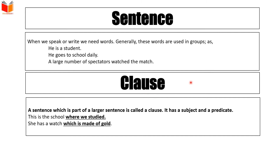اسی سے ملتا جلتا ایک اور element ہے جسے clause کہتے ہیں۔ Phrase، sentence اور clause تینوں آپس میں ملتے جلتے ہیں۔ Phrase کے اندر subject نہیں ہوتا، sentence کے اندر subject بھی ہے اور verb بھی۔ A sentence which is part of a larger sentence is called a clause۔ ایک ایسا sentence جو ایک بڑے sentence کا حصہ ہو اسے clause کہتے ہیں۔ It has a subject and a predicate۔ Sentence اور clause دونوں میں subject اور predicate ہوتے ہیں، فرق یہ ہے کہ clause ایک بڑے sentence کا حصہ ہوتا ہے۔